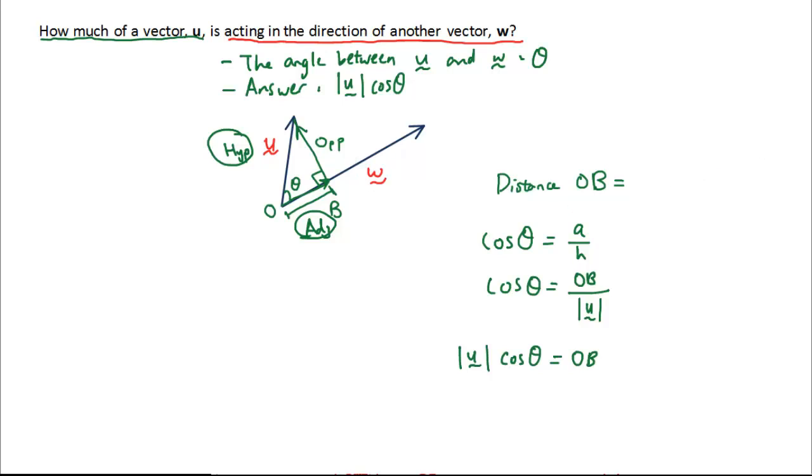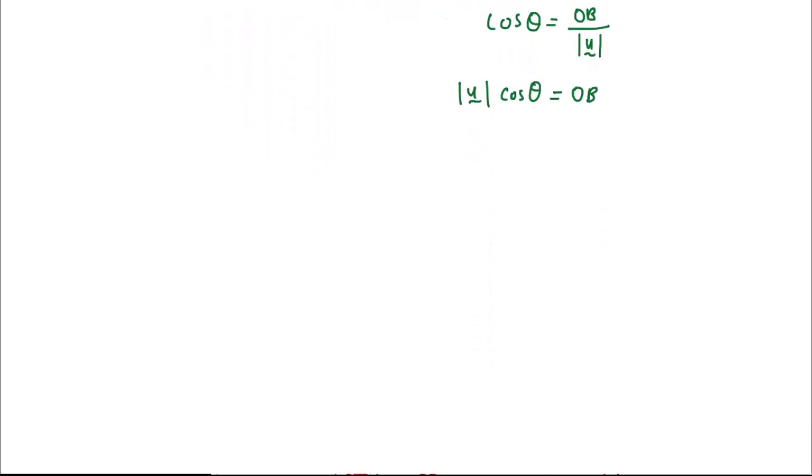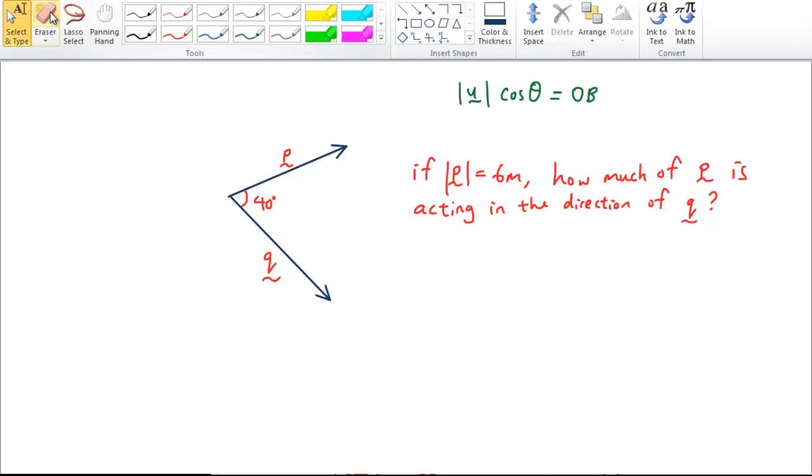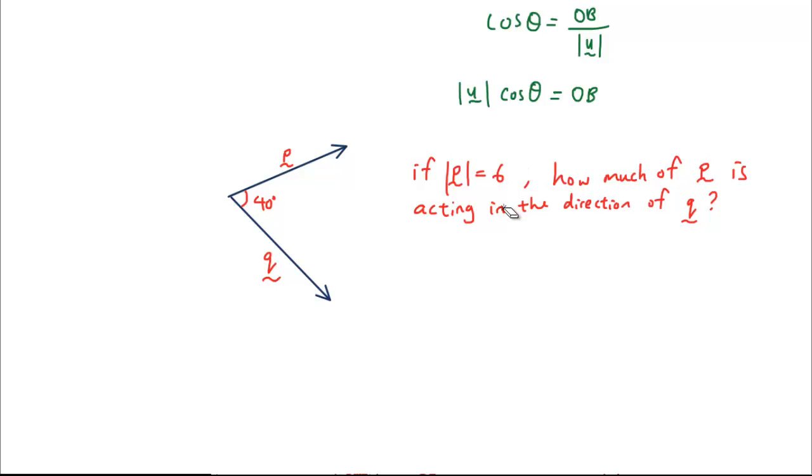So let's try it with a real life example. Alright, so in this diagram, we have a vector p and a vector q, and the angle between them is 40. Now, if the length of vector p is 6 meters, how much of vector p is acting in the direction of vector q? So, rather than 6 meters, actually, I'm just going to get rid of the units, because it could be 6 of anything. So, if the length of p is 6, get that done, come back when you're done.